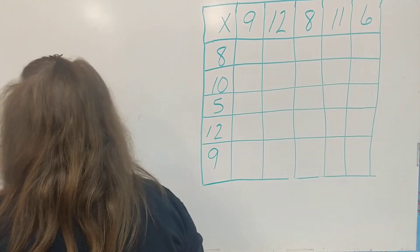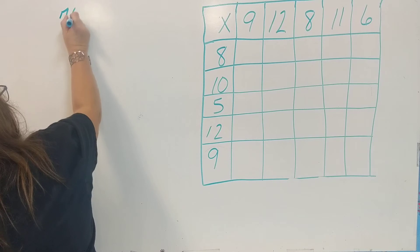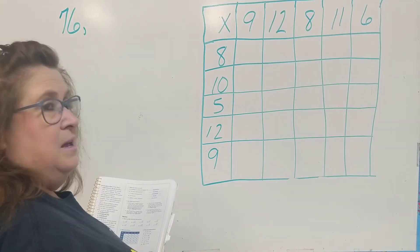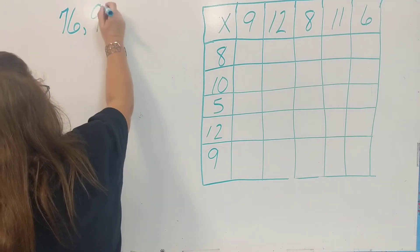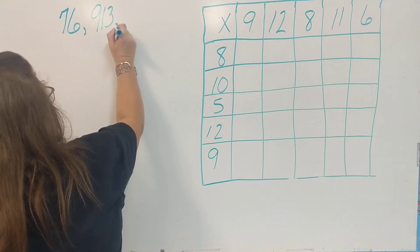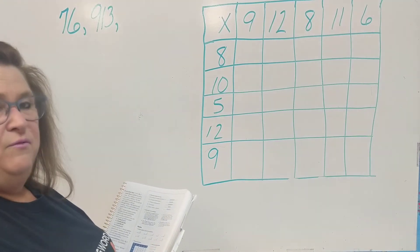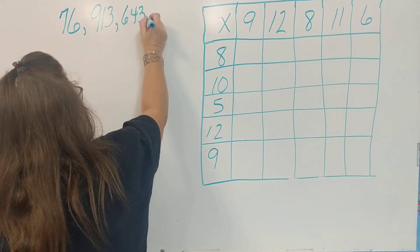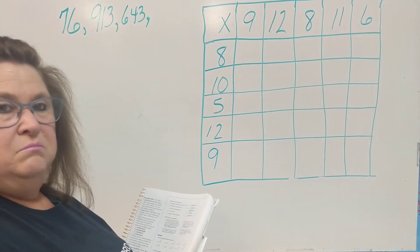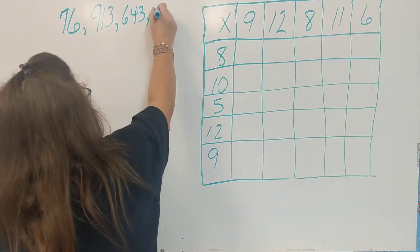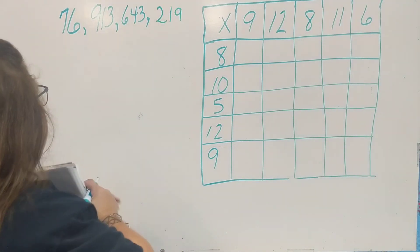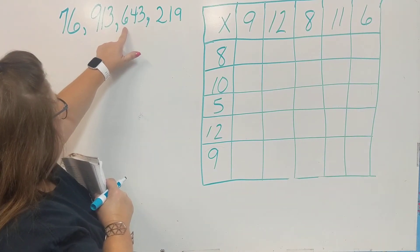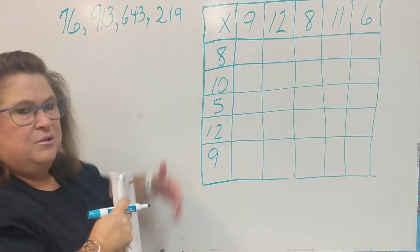It says 76 billion — so we're going to write the number 76 and give it its last name, billion. 913 million — write 913, give it its last name, million. 643,000 — write 643, give it its last name, thousands. 219 — write 219. That is the number 76,913,643,219.